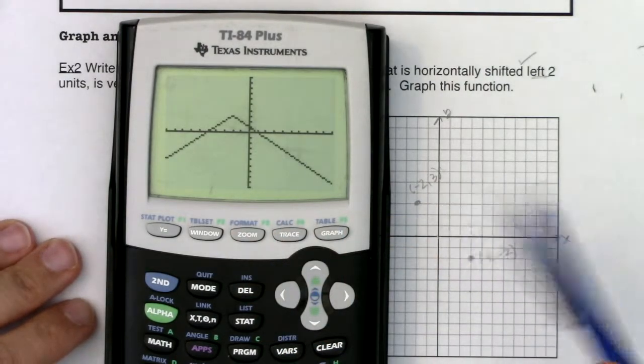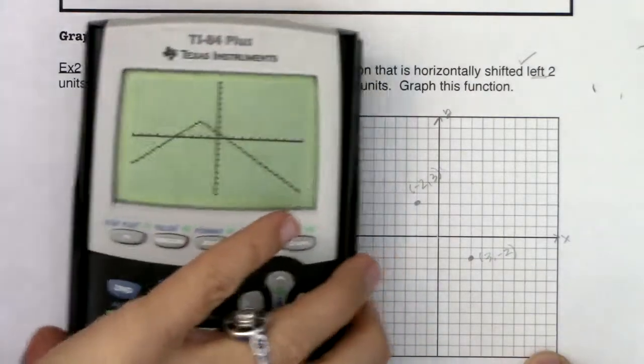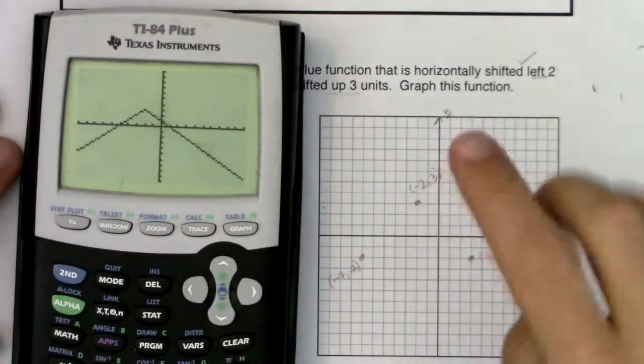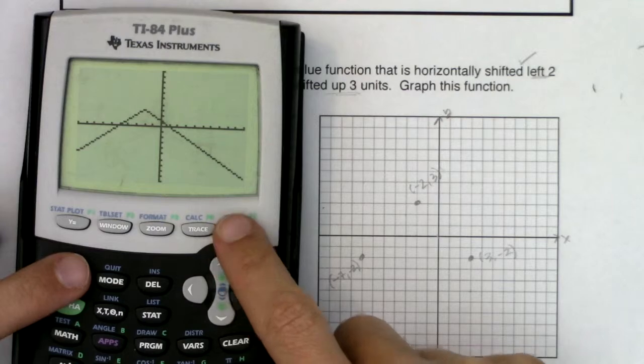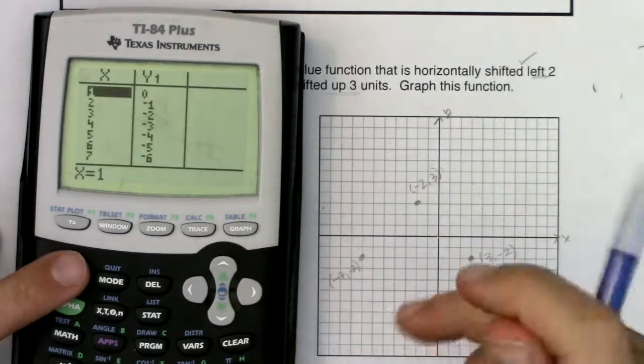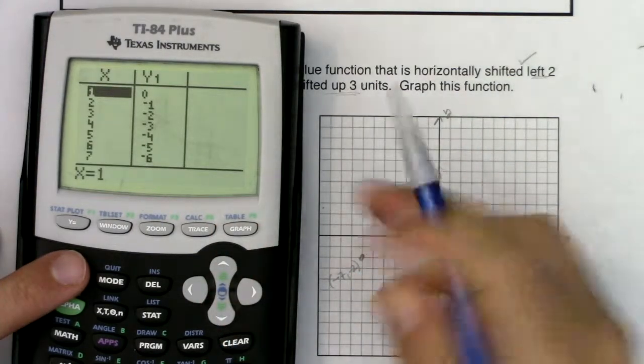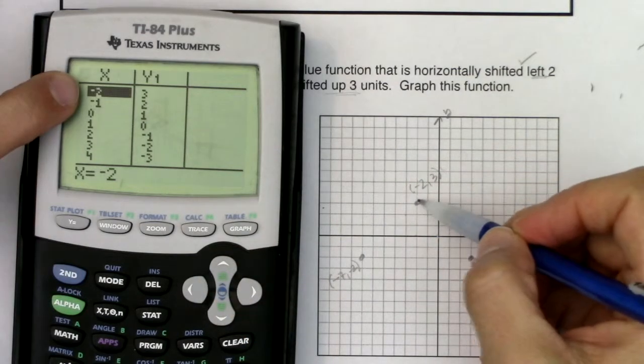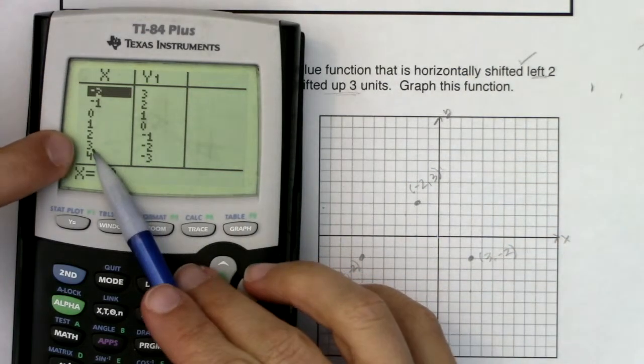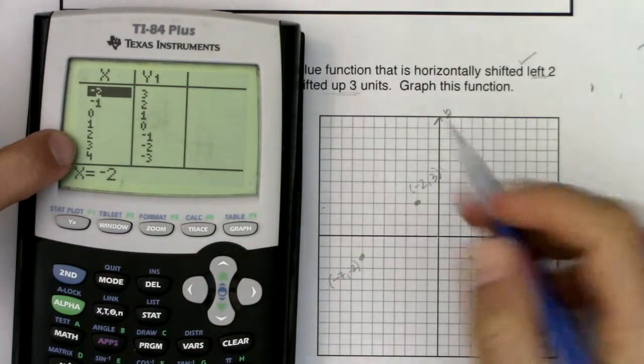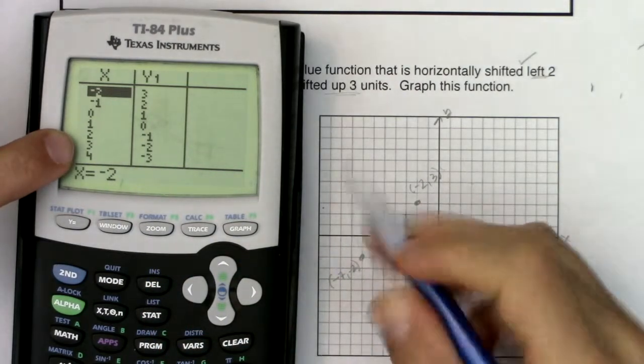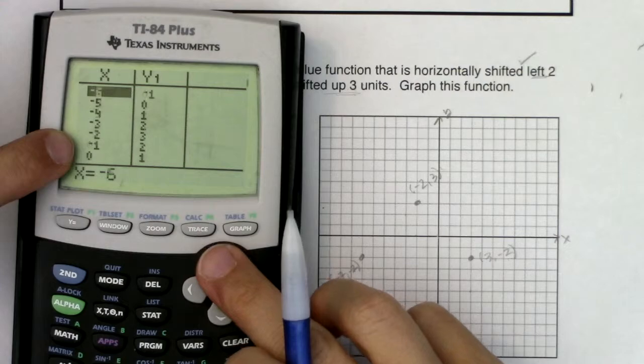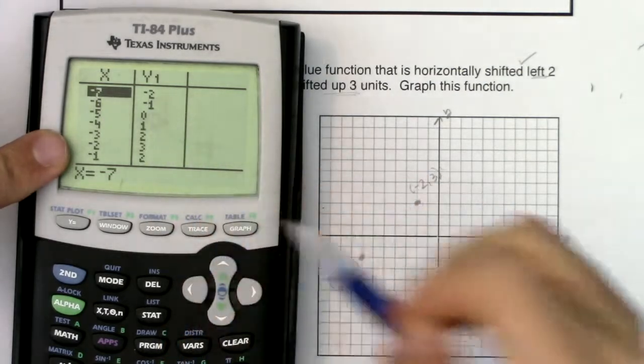All right, that doesn't look too far off from what I thought I might be getting. Now let's go see if my vertex was correct. So let me hit second and table and see what we had. I thought the vertex was at negative 2, 3. It looks like it is, right? I have that point negative 2, 3. I also see over here 3, negative 2. I thought I had that point. Let's see if I got negative 7, negative 2. Should I? Yep, negative 7, negative 2.